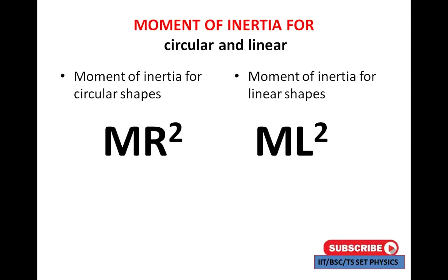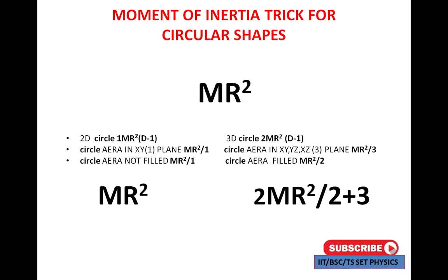First rule: moment of inertia for circular shapes is MR squared and for linear shapes is ML squared. For circular shapes — if the shape is two-dimensional, then D minus one gives a value of MR squared. For a three-dimensional circle, it is 2MR squared. For a circular area in the XY plane — that means a single plane — the value is MR squared by 1.